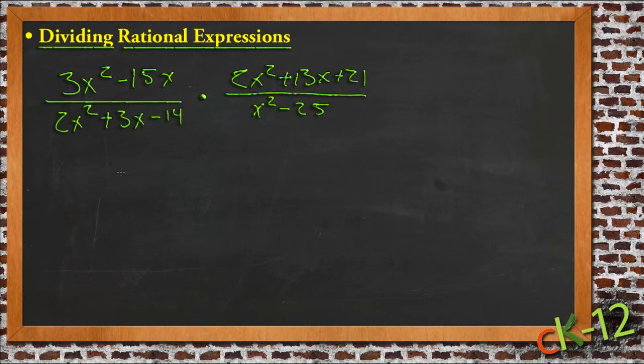So now we need to factor. If we factor, starting with this top expression here, we can pull out a 3x, so we'll have 3x times x minus 5.